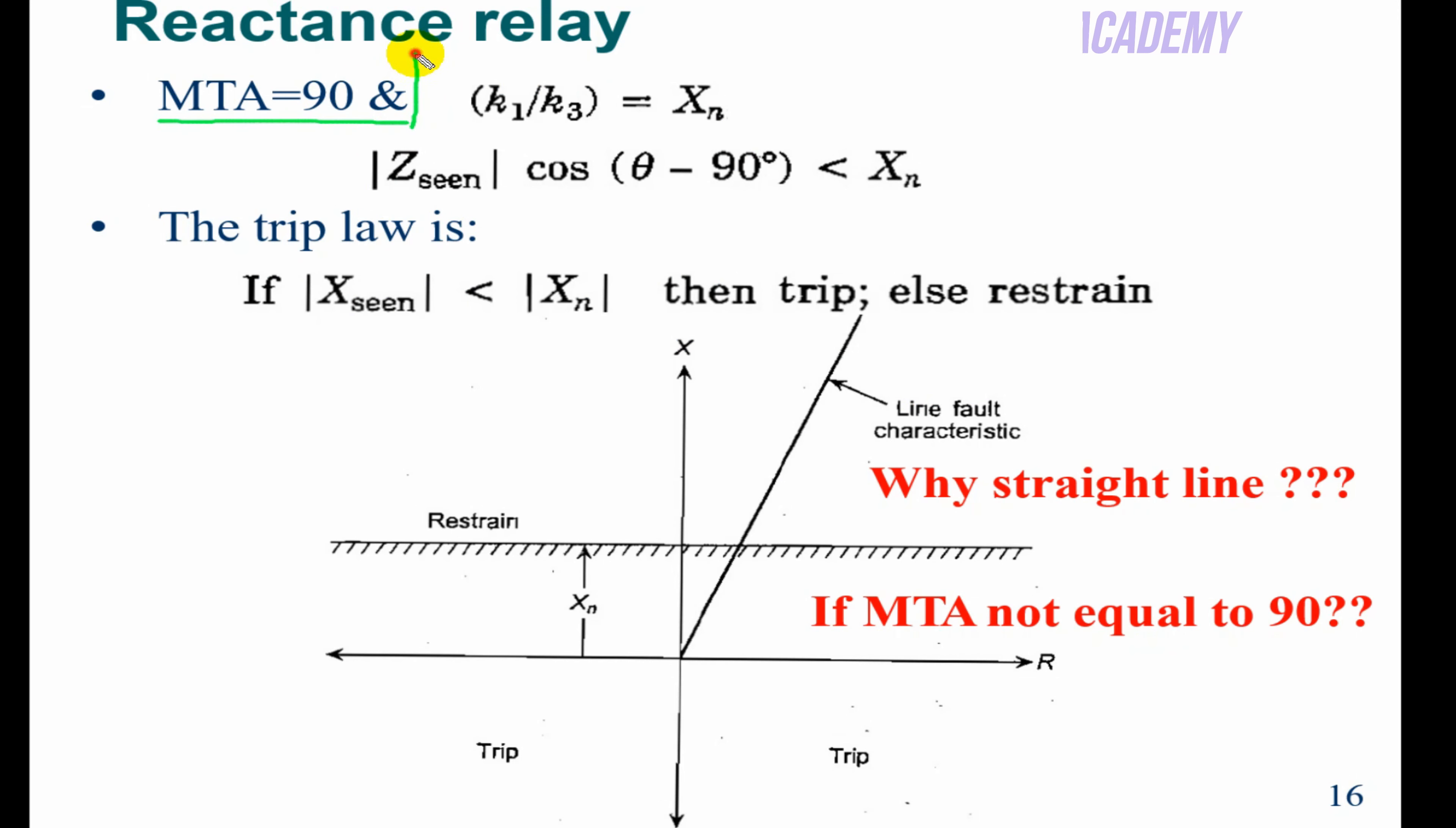What I will do is set MTA to 90 degrees. If I keep MTA at 90, Z_seen will convert to just reactance. Because if I have the Z line and I set MTA at 90 degrees, this becomes just X. This is what we call the reactance relay. Similarly, k1/k3 I set as X_n, which is the set value.